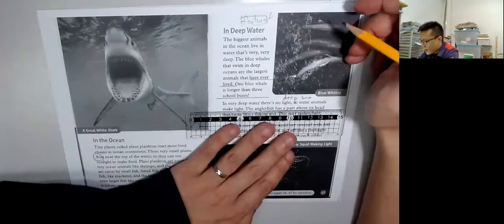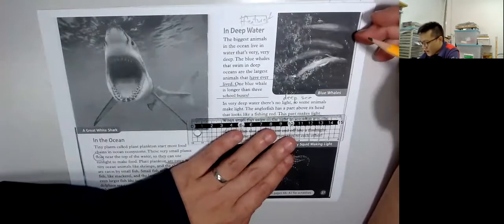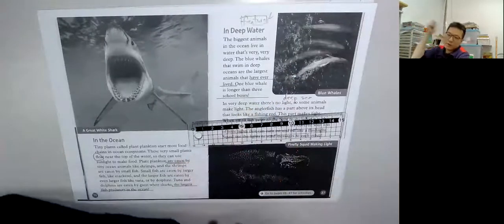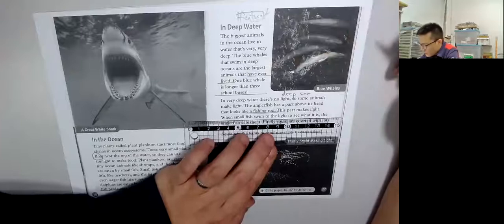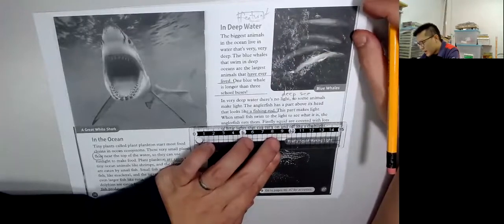In very deep water, there's no light, so some animals make light. Angler fish has a part above its head that looks like a fishing rod. And this part makes light. When small fish swim to the light to see what it is, the angler fish eats them.